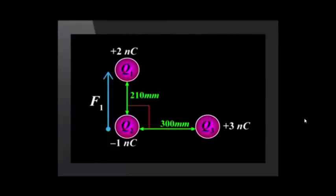Before we start this question, we'll draw a free body diagram for the forces on Q2. Q1 and Q2 are oppositely charged, so Q1 exerts an upward force on Q2. We name this force F1. Q2 and Q3 are oppositely charged, so Q3 exerts a horizontal attractive force on Q2. We name this force F2.